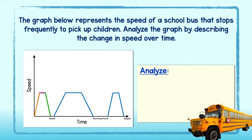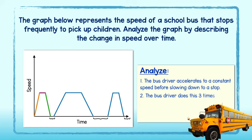In our analysis, we will summarize. First, the bus driver accelerates to a constant speed before slowing down to a stop. The bus driver does this three times. Good.